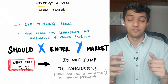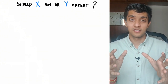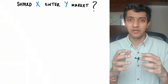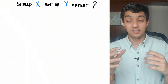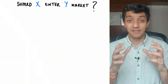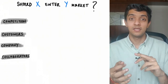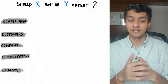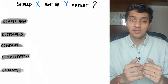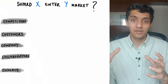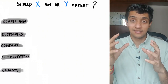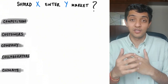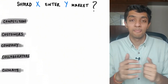So how do you approach these questions? To start, you can follow a framework called the 5C framework. 5C stands for competition, company, customer, collaborators, and climate. What you're supposed to do is think about each of these points, come up with data points from your analysis, and then take a call on whether a company should enter or not enter a particular market.